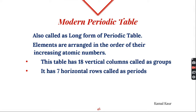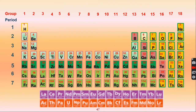The modern periodic table is also called the long form of periodic table. Elements are arranged according to their increasing atomic numbers. It has 18 groups and 7 periods. From 1 to 18, these vertical columns are the groups, and from 1 to 7, these horizontal rows are called periods.